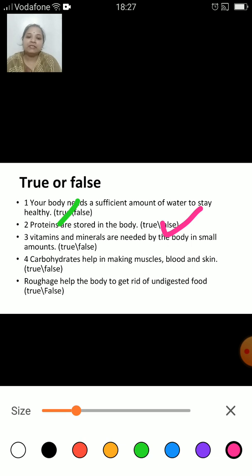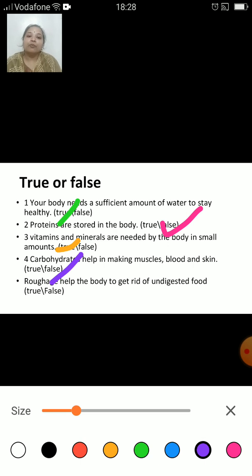Vitamins and minerals are needed by the body in small amounts — true or false? True, vitamins and minerals are needed in very small amounts by the body. Carbohydrates help in making muscles, blood and skin — true or false? That's false. It is protein that helps in making muscles, blood and skin. It also helps to repair damage in the body and is called body-building food.